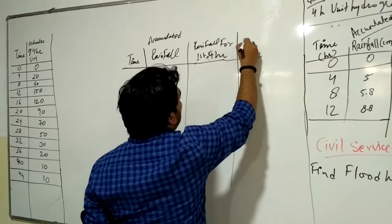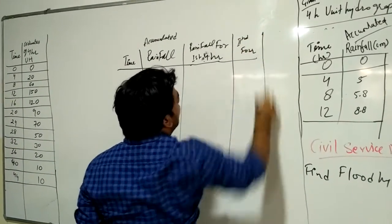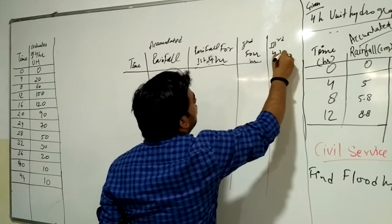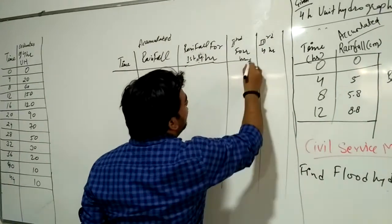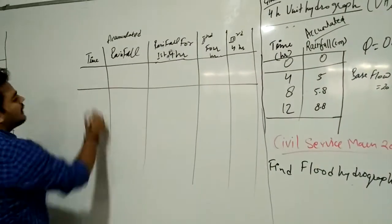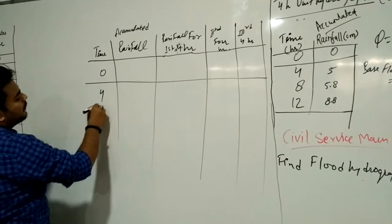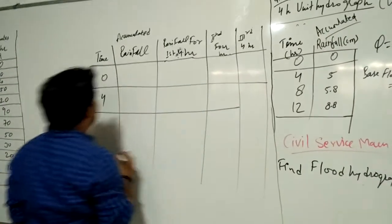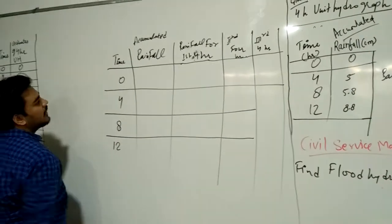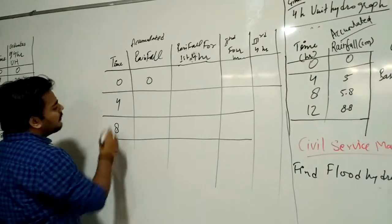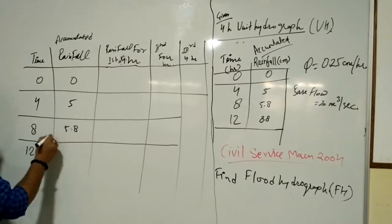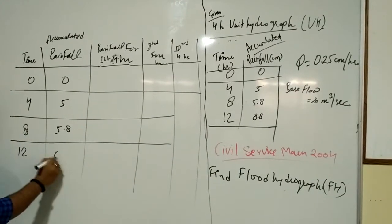Then the second four hours and at last the third four hours. The data given is: time values are 0 hours, 4 hours, 8 hours, and 12 hours. The corresponding rainfall intensity values are 0 at 0 hours, 5 at the fourth hour, 5.8 at the eighth hour, and 12 at the twelfth hour.